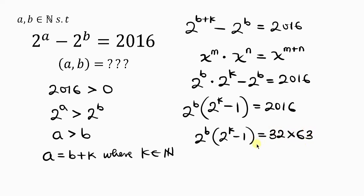I notice that 2^b is even because 2 is even, and whatever power I raise it to, I'm still going to have an even value. But 2^k is even, and when I subtract 1, it becomes odd. So 32 is even but 63 is odd. Our next step will be to compare the expressions on the left and the expressions on the right.